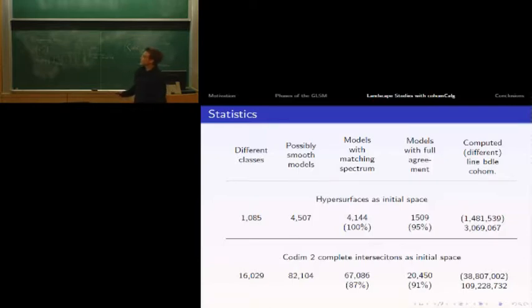Let me show you statistics for the hypersurface case. We had 1,085 different classes as starting points. From those, we obtained about 4,500 smooth dual models. When comparing the chiral spectrum, we found 4,144 cases matched the original one - a match of 100% because the others either had no duals or we couldn't calculate them. Full agreement was found in 95% of calculable cases, which was 1,509 models.